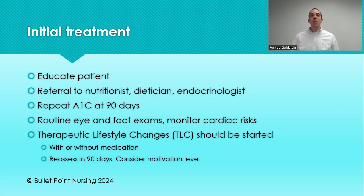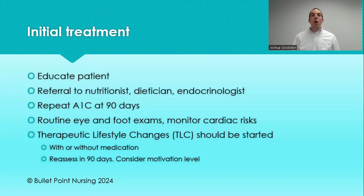Once we have them at their target, we start checking A1C every six months. Any patient diagnosed with type 2 diabetes needs a routine eye exam and/or a referral to an ophthalmologist. They also need a routine foot exam every single visit — we're looking for the sequelae of diabetic neuropathy. Also monitor for cardiac risk, since diabetes is a comorbidity factor in so many different diseases, especially as it relates to the heart.